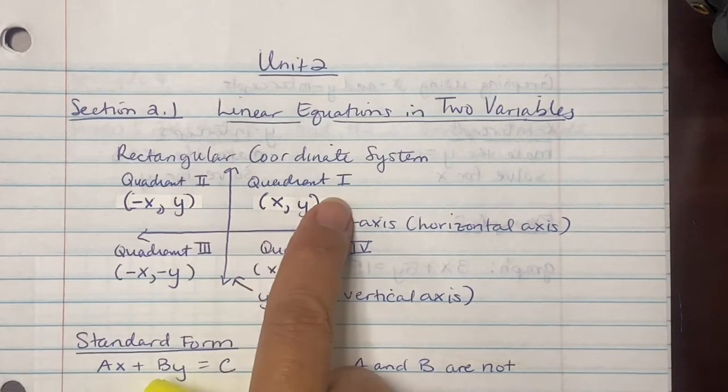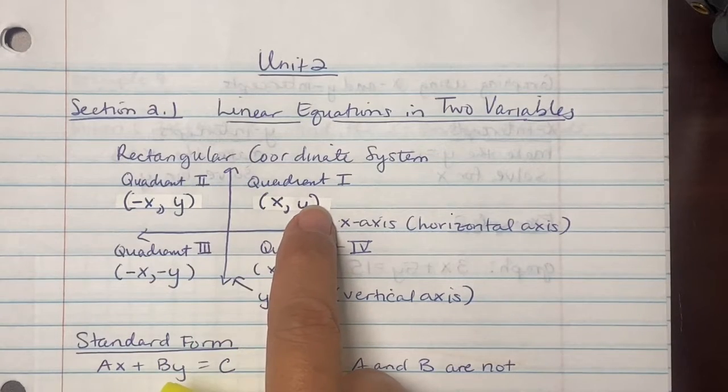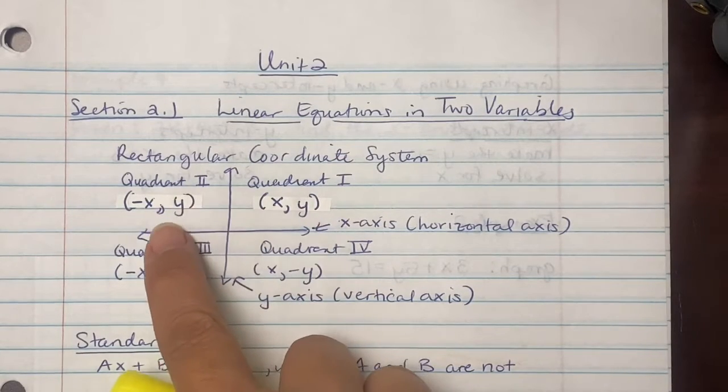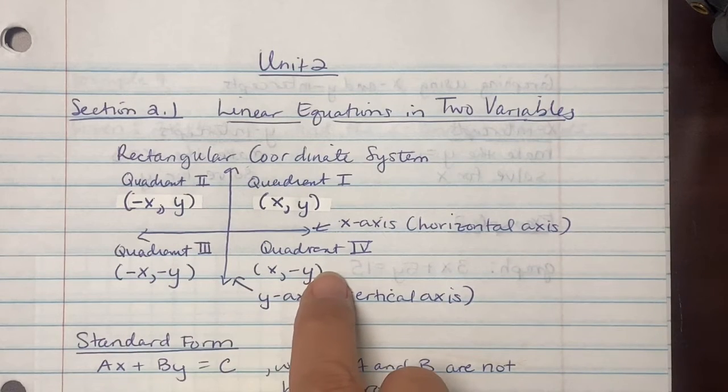So here I've given you the rectangular coordinate system, and it goes counterclockwise. It goes quadrant 1, where x and y are both positive, quadrant 2, negative x and positive y, quadrant 3, negative x, negative y...